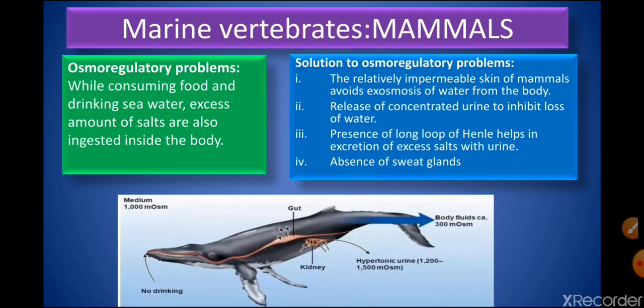Important marine mammals include whales. While consuming food and drinking sea water, they ingest excess salts. Solutions include: relatively impermeable skin to avoid exosmosis; release of concentrated urine to limit water loss; presence of a long loop of Henle which helps excrete excess salts with urine; and absence of sweat glands.